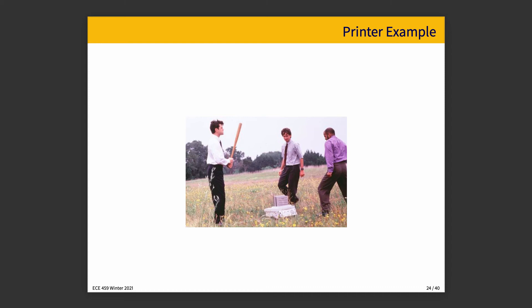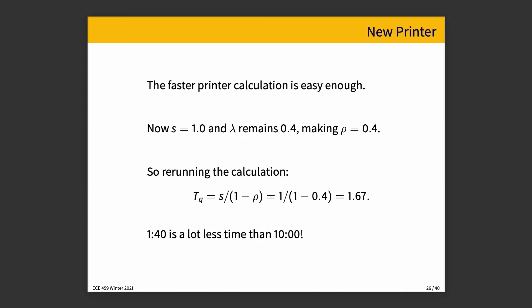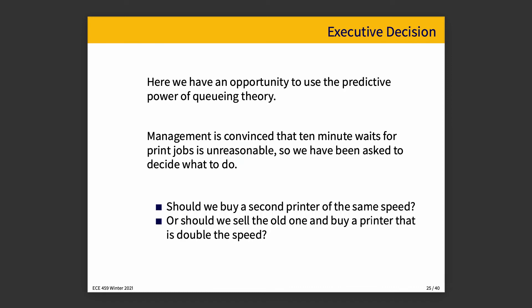We're gonna use the predictive power of queuing theory. Everybody hates printers, by the way. That's a universal thing, and I understand there are holiday sweaters available now that say, no, I don't fix printers, which I've probably needed in my life. Anyway, so if you can convince management, and maybe management in this case is EC department staff, that a 10-minute wait for a print job is unreasonable. So we've been asked to do an analysis and make a decision. Should we, number one, buy a second printer that is of the same speed, or, number two, can we sell the old printer and combine that money with the funding that the department is going to kick in, and buy a printer that is double the speed? Think for a minute about sort of what your intuition tells you. Should we buy a second printer of the same speed, or sell the old one and get one that is double the speed?